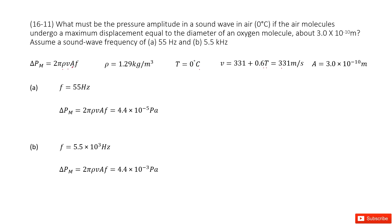Amplitude is given, and the frequency in the first case is 55 Hz. We input all the known quantities and get the answer. In the second case, the frequency becomes 5.5 kHz. We input ρ, V, A, f and get the answer. Thank you.